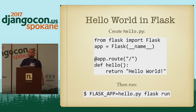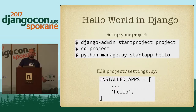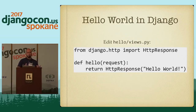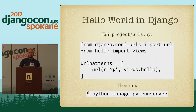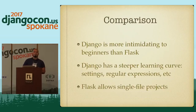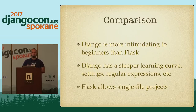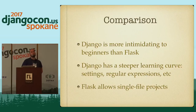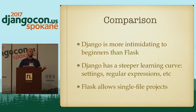By contrast, if you want to do Hello World in Django, you start by installing Django, then run 'django-admin startproject project', go into your project, make your hello app, and put that into settings.py. Then you write your hello view, which requires importing HttpResponse and returning it. Then you have to deal with urls.py, which means writing regular expressions — always a pain, especially for someone new to programming. I've found that when talking with people new to web development in Python, Django is more intimidating to beginners than Flask. Django has a steeper learning curve: settings, regular expressions, projects versus applications. Flask is much simpler — you can have your entire project in a single file.